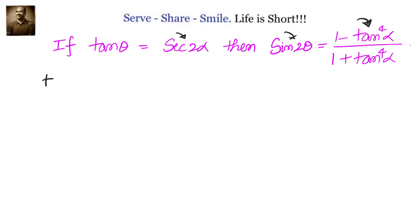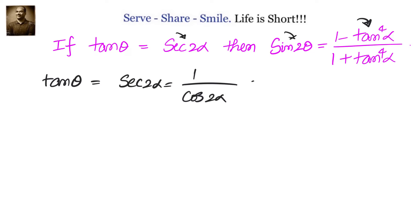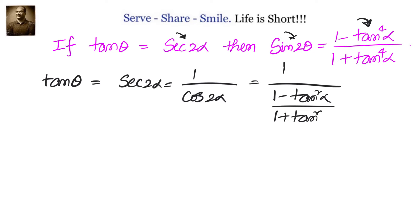First, we will write tan θ equals sec 2α, which equals 1 divided by cos 2α. But we know we can write cos 2α as (1 minus tan² α) divided by (1 plus tan² α). So tan θ becomes (1 plus tan² α) divided by (1 minus tan² α).